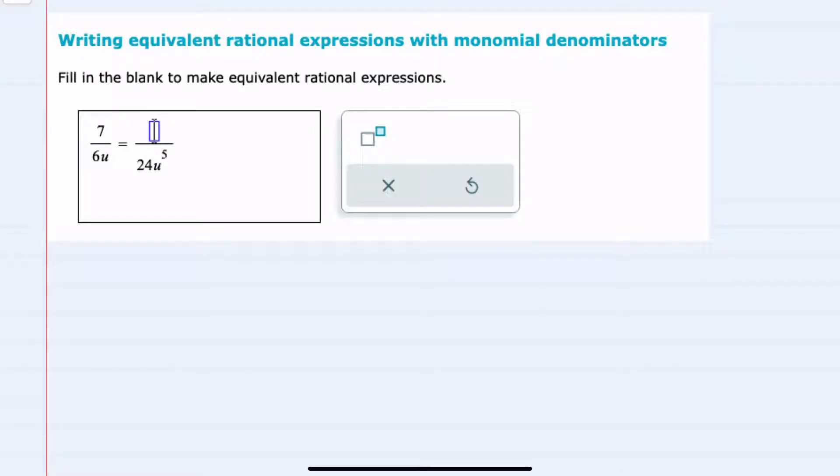In this video, I'll be helping you with the Alex problem type called Writing Equivalent Rational Expressions with Monomial Denominators. We're asked to find the numerator here on the right-hand side such that these two fractions are equivalent.